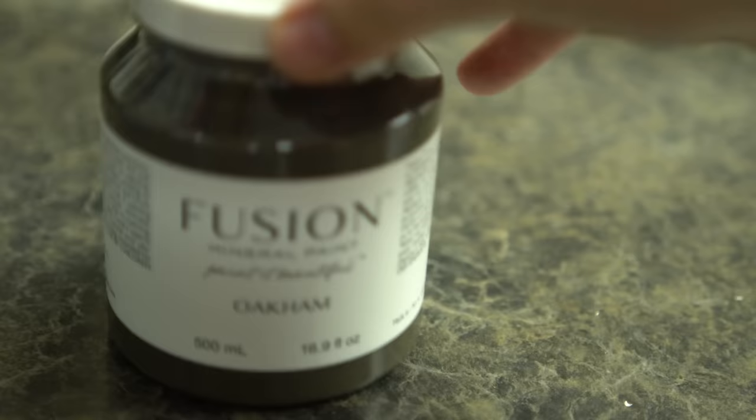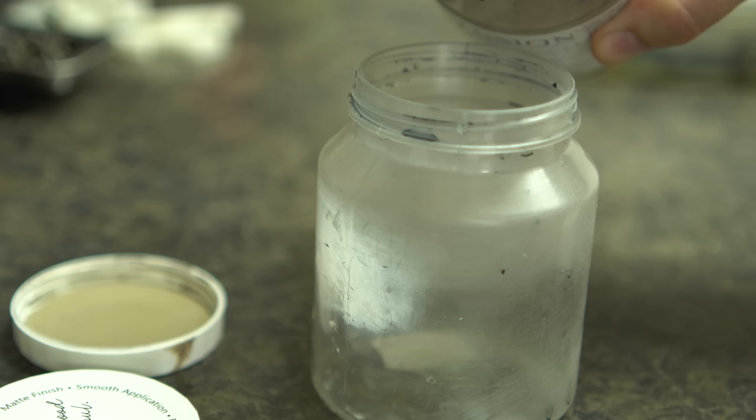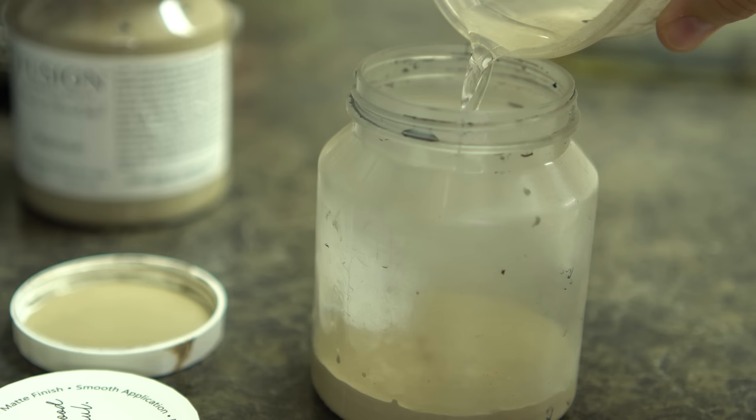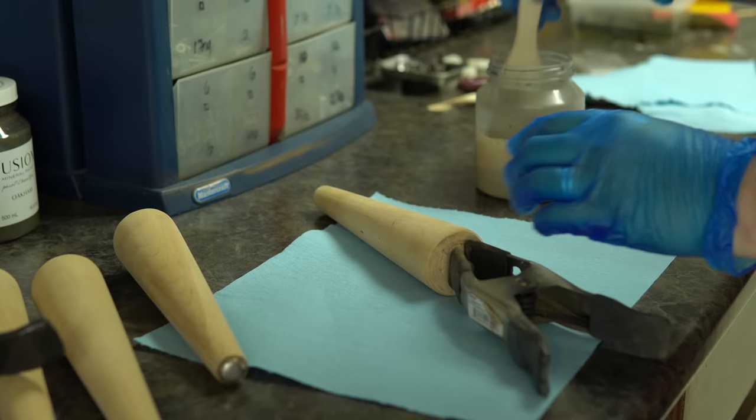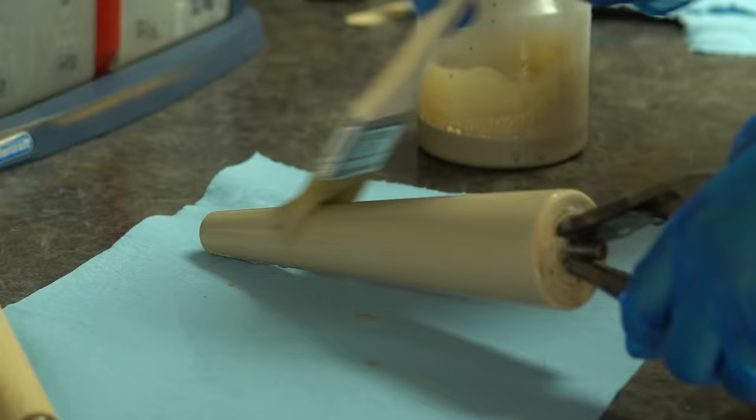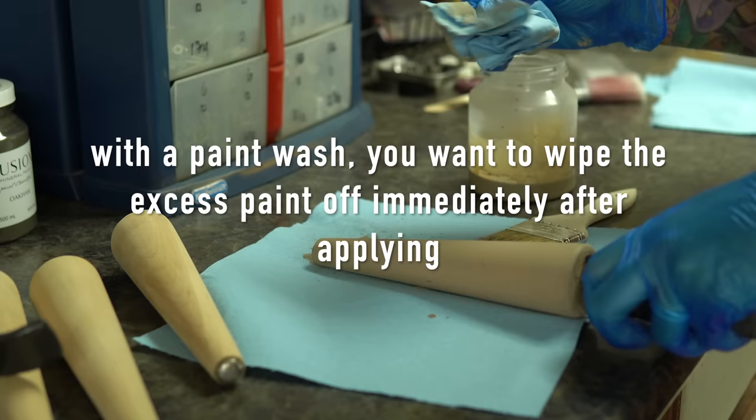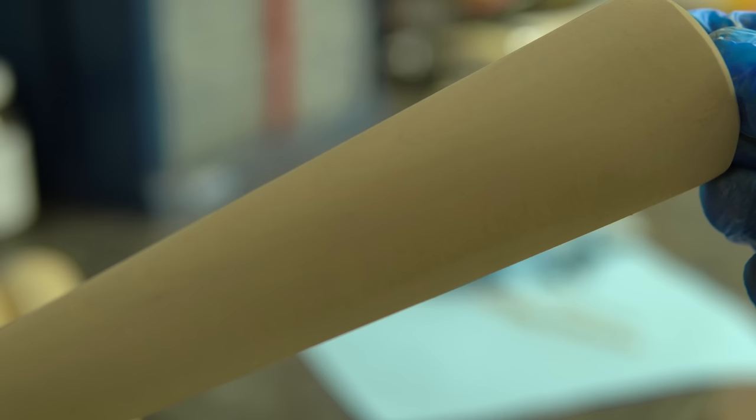I recently acquired some of Fusion Mineral Paint's newest colors and Oakham is one of them. That's what I'm going to be painting the dresser in and Algonquin is what I'm going to be using to make sort of a beige wash on the legs. I did about a 50-50 mix. Were I doing this again, I would probably dilute it slightly more. It was a little bit more opaque than I was initially hoping for, but it's not completely opaque. You can still see a little bit of the wood grain, but it would have been nice if I diluted it a bit more.